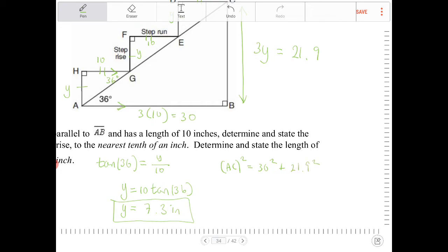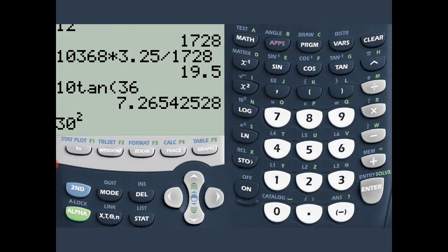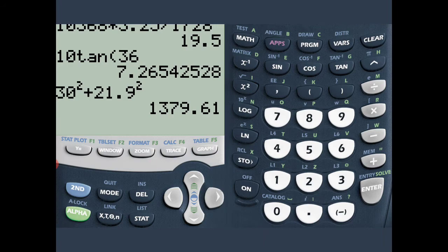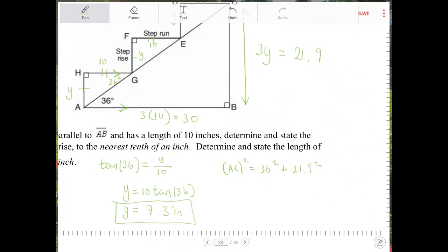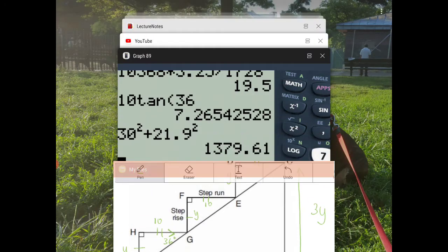So let's figure out what that is. Let's determine what is AC squared. So that's 30 squared plus 21.9, so this is 13.9 squared. 1379.61. So this is 1379.61. That's AC squared. Now we're going to take the square root of both sides to figure out what AC is.